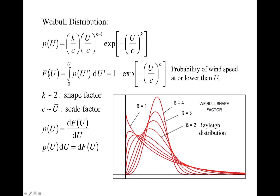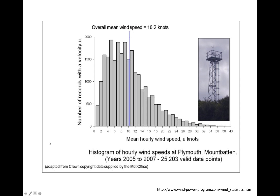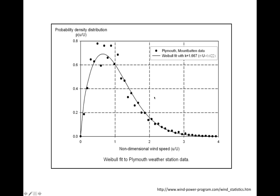The cumulative distribution F(U) is the integral of the probability density function and gives the probability of wind speed at or below speed U. The derivative of the cumulative probability is the probability density, and rearranging gives an equality we will use when deriving the AEP. For this wind speed histogram from Plymouth in England, the best-fit Weibull distribution has a shape factor of about 1.667, shown as the black curve, and it gives quite a good approximation of the histogram.